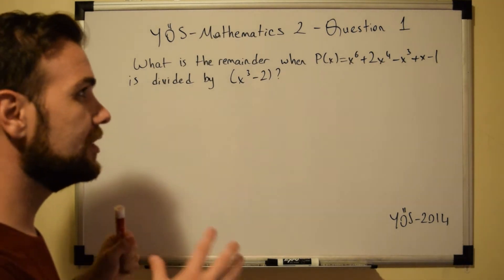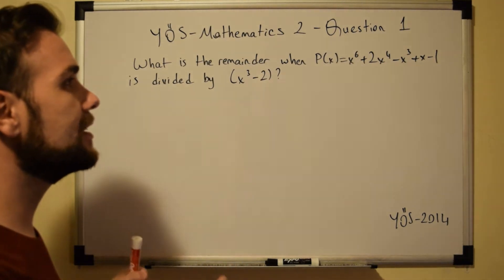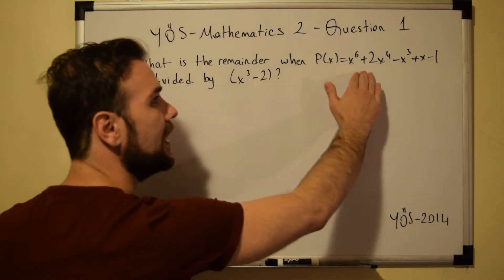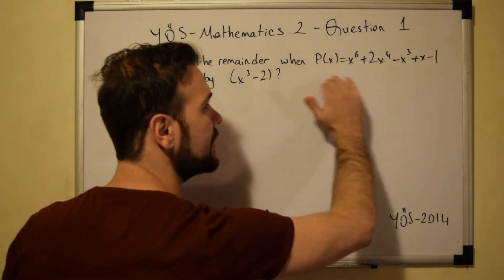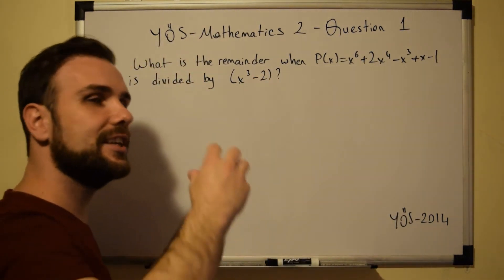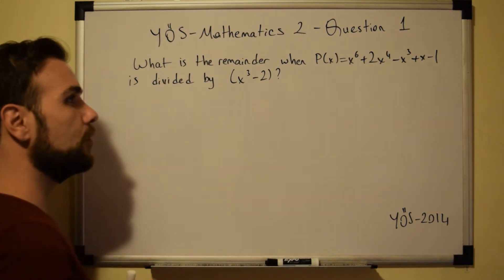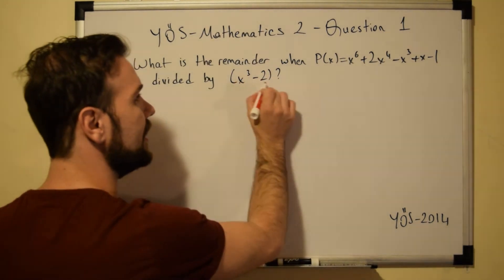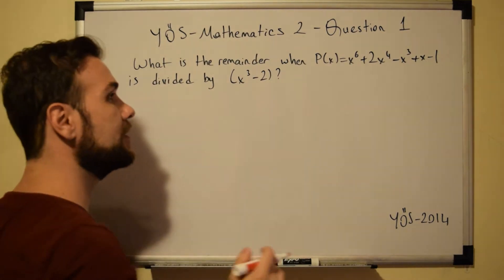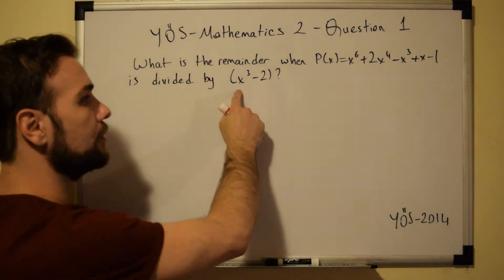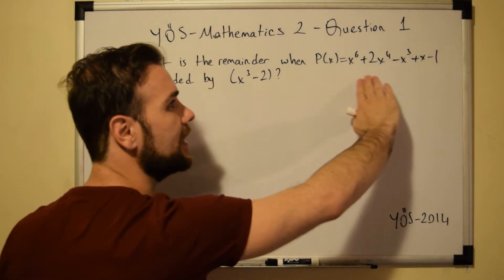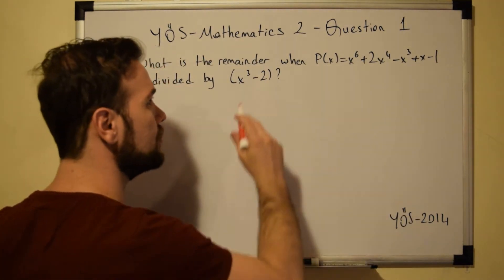When you are dealing with these kinds of questions, instead of going directly to divide this expression by this expression, there is an easier way. All we have to do is equalize the divisor to 0, because by doing so we will get the value of x to the power of 3, and everything else will become very easy.